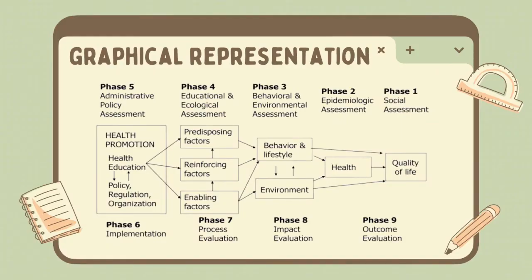This graphic shows how the PRECEDE-PROCEED model functions to find desired results by assigning priority measures for possible obstacles that can hinder ultimate goals. In the top portion, we can see the phases of PRECEDE, which include social assessment, epidemiologic, behavioral and environmental assessment, educational and ecological assessment, and administrative policy assessment. It includes identifying predisposing, enabling, and reinforcing elements that affect behaviors, attitudes, and environmental factors, as well as administrative policy considerations that determine what can be done. In the bottom portion, we see the phases included in PROCEED, which includes implementing and conducting the intervention, evaluating the process, evaluating the impact on the target population, and evaluating the outcome and how it aligns with what was planned in phase one.